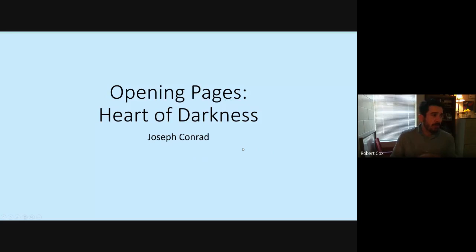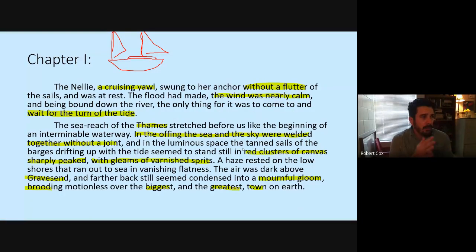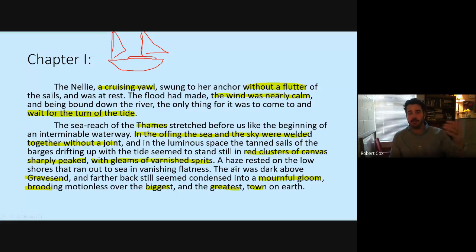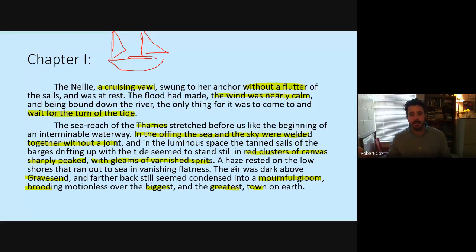So, opening pages of Heart of Darkness — let's take a look at these first two paragraphs. 'The Nellie, a cruising yawl, swung to her anchor without a flutter of the sails and was at rest. The flood had made, the wind was nearly calm, and being bound down the river, the only thing for it was to come to and wait for the turn of the tide.' Here's our opening, setting the scene. This establishes the place where the story is going to be held. As we talked about in the introductory lesson, in this story we've got a present time where a character named Marlow is going to be telling us the story of his trip through the Congo — this time in the past. This is the place where Marlow is now going to tell us his story.